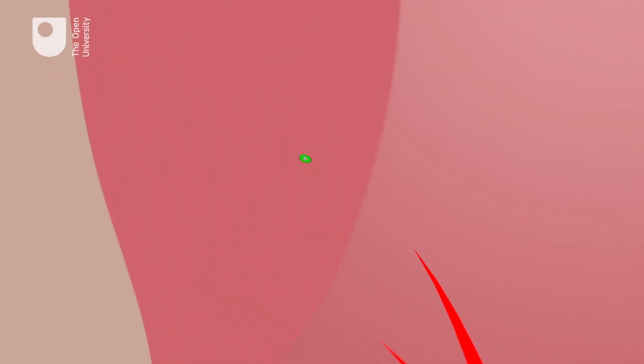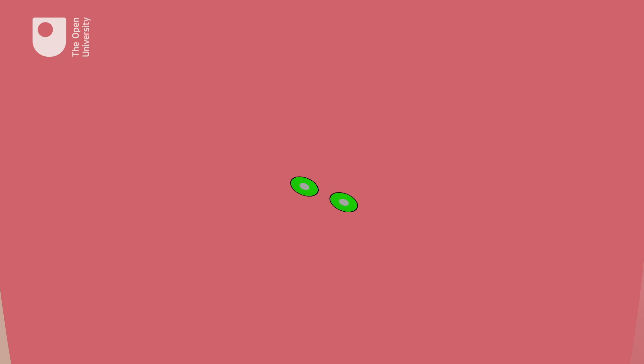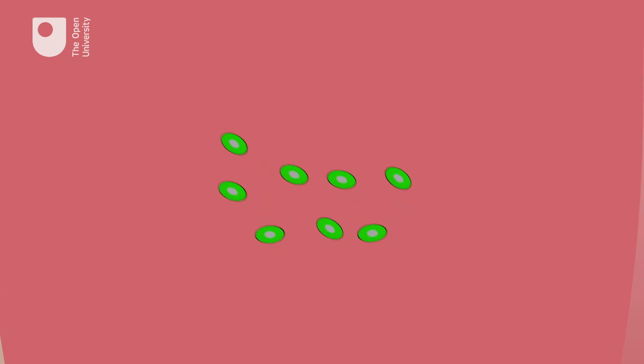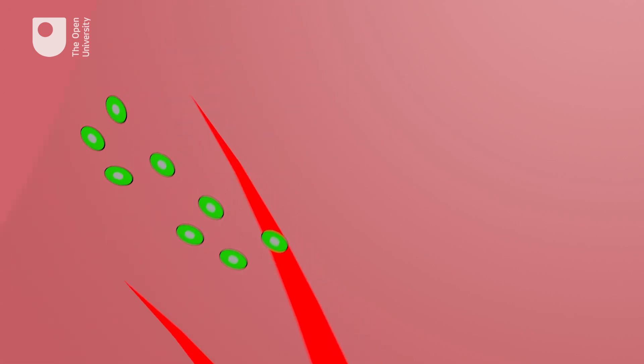Once in the circulation of the infected human, the malaria parasite travels to the liver and multiplies. After multiplying, the malaria circulates again in the blood.